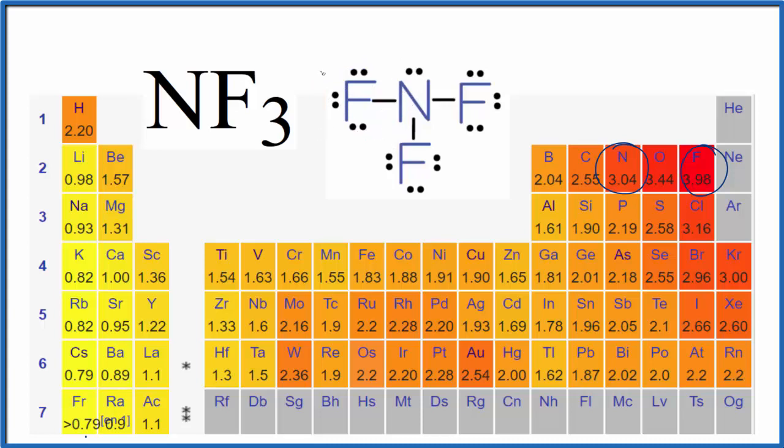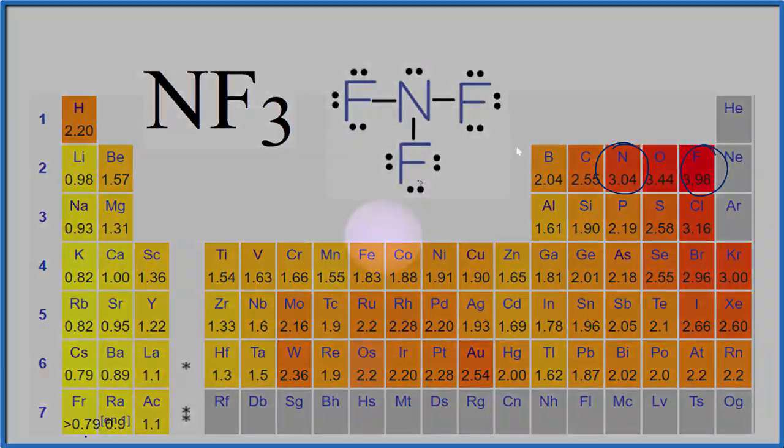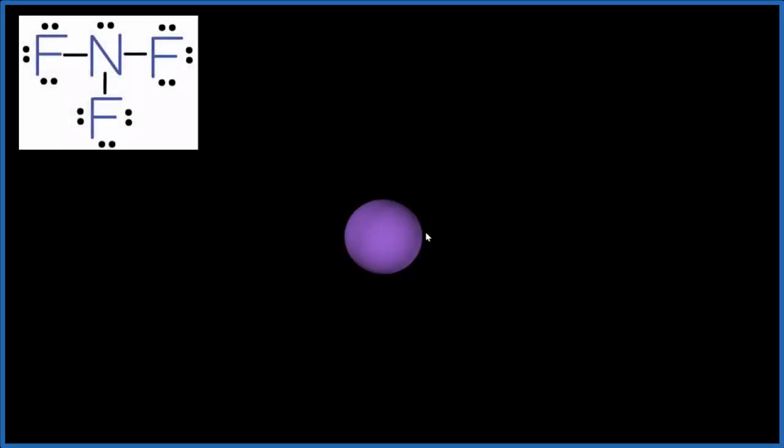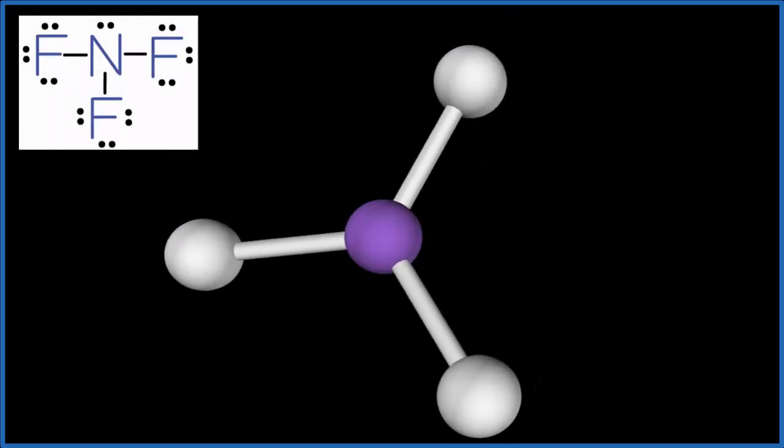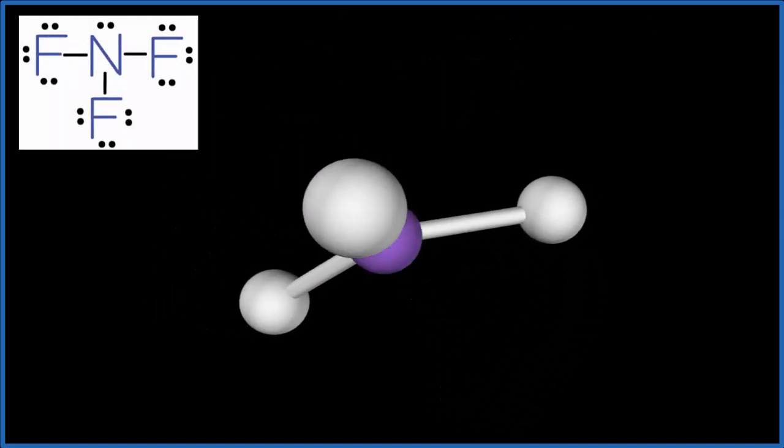Let's look at the molecular geometry though to figure out if the whole molecule is polar overall. The purple, that'll be the central nitrogen atom, and then we're going to add three fluorine atoms: one, two, three. And you see they spread out to be as far away as they can from each other.